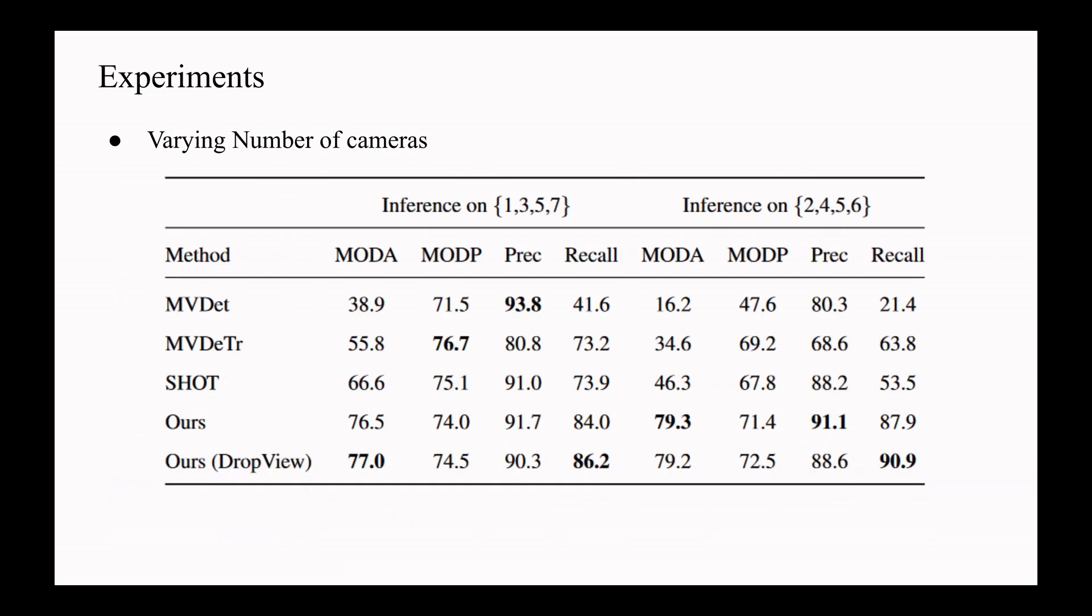Varying number of cameras: Here the model is trained on WildTrack dataset having 7 cameras and tested on camera setups which are split into 2 sets. The performance of previous work degrades drastically in this setting.